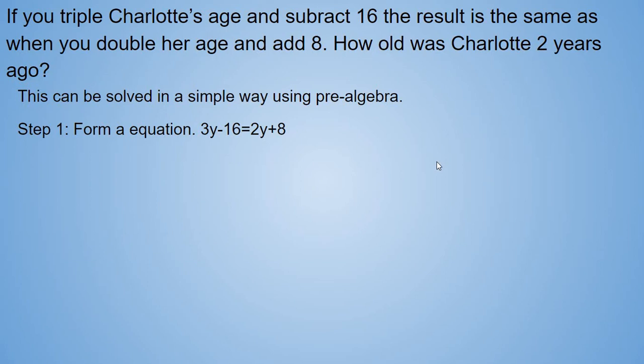Okay. So first step in pre-algebra is we need to form an equation. So triple Charlotte's age, so Y is my variable for Charlotte's age because that's the unknown value. If you triple Charlotte's age, 3y, and subtract 16, minus 16, that's the same as double her age and add 8, 2y plus 8. 3y minus 16 equals 2y plus 8. That's our equation.